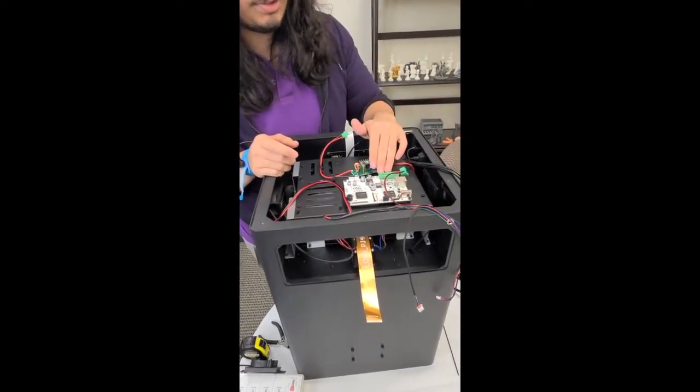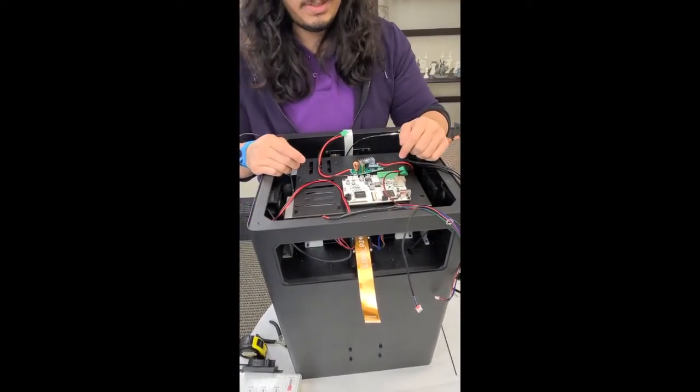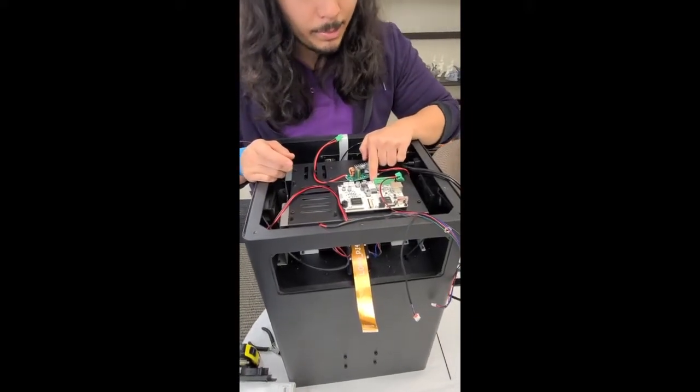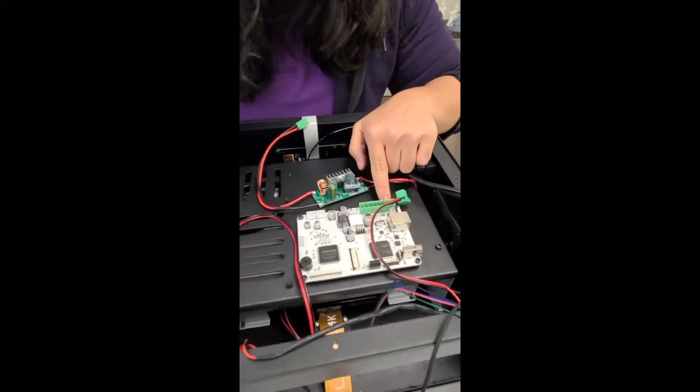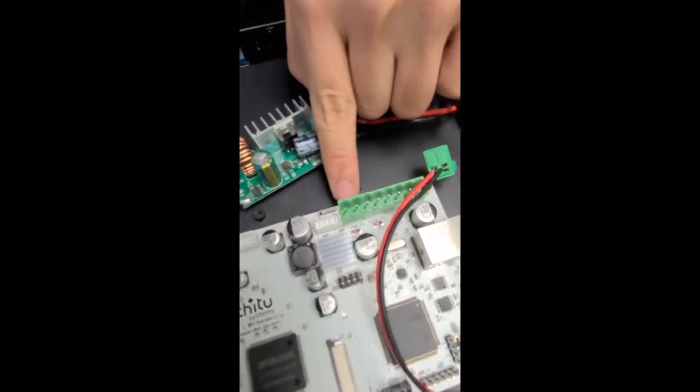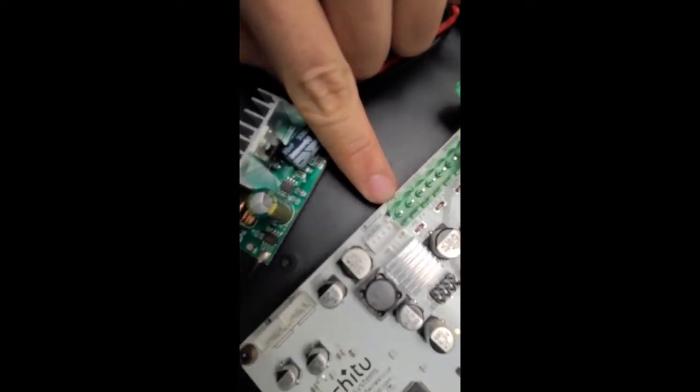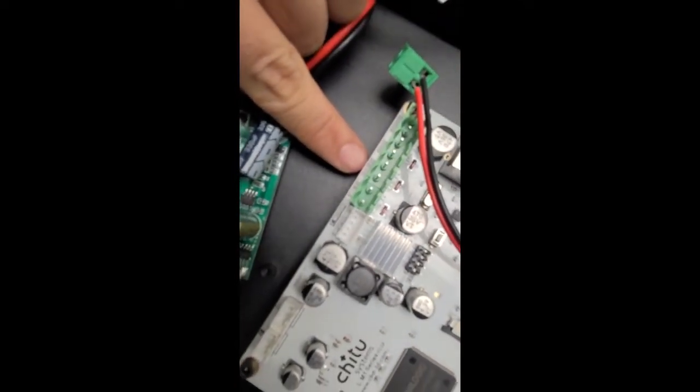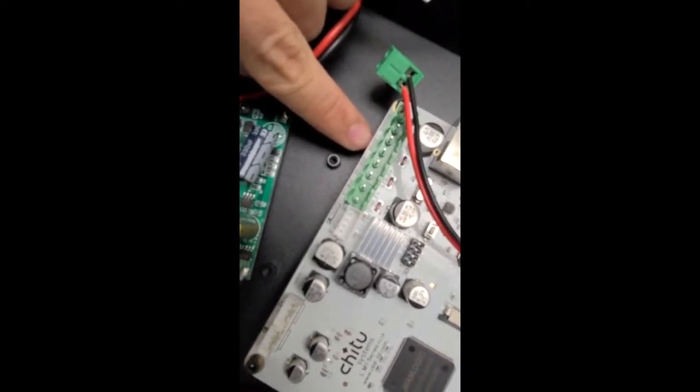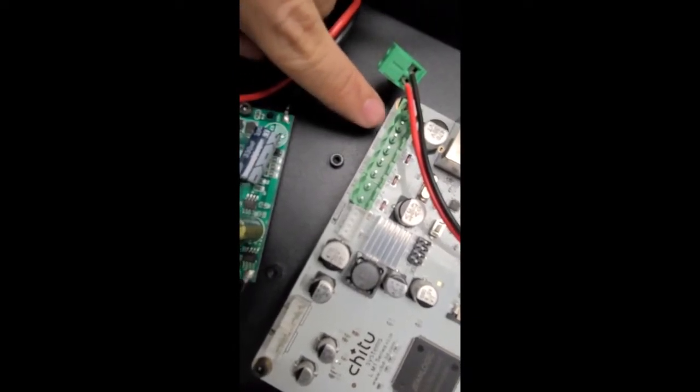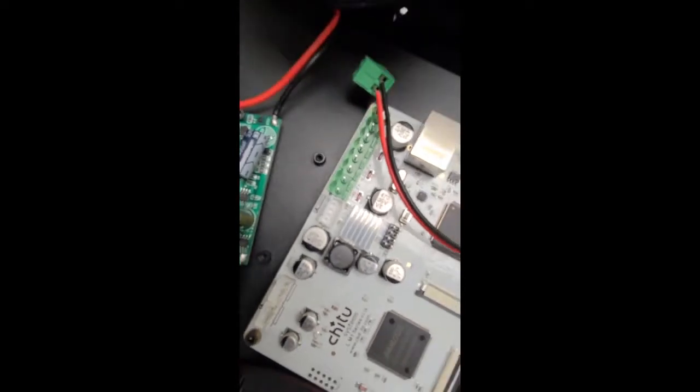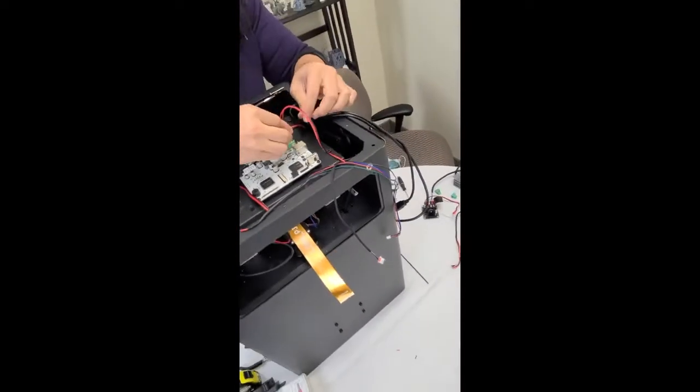So if you aren't sure where each Phoenix connector connects to, there are little labels right above these connections. So this one will be the mainboard fan. This one will be the LED fans. This one will be the LED driver. And this will be your power source. So connect them like so.